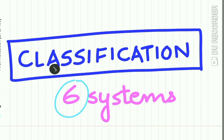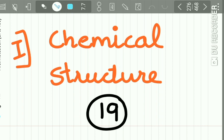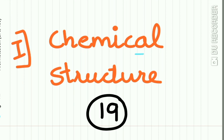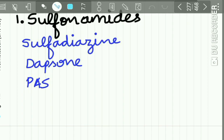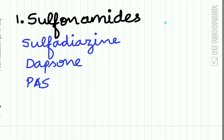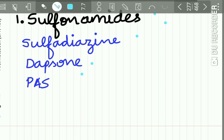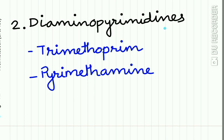There are six systems of classification of antimicrobial agents. The first basis of classification is depending upon the chemical structure of the drug, and they are divided into 19 different categories. The first is the sulfonamide and related drugs, which include sulfadiazine, dapsone, and para-aminosalicylic acid (PAS). The second is the diaminopyrimidine group, which includes trimethoprim and pyrimethamine.